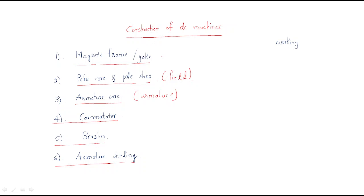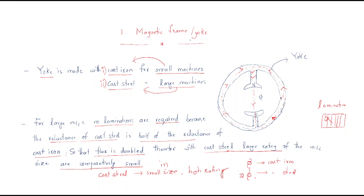Hello everyone. In the last session we discussed about the construction of DC machines. We already covered some details of the magnetic frame or yoke. The main intention of the magnetic frame is to provide a path for the flux and a return path for the flux. Flux comes from the north pole and enters into the south pole, then travels the return path again to the north pole.